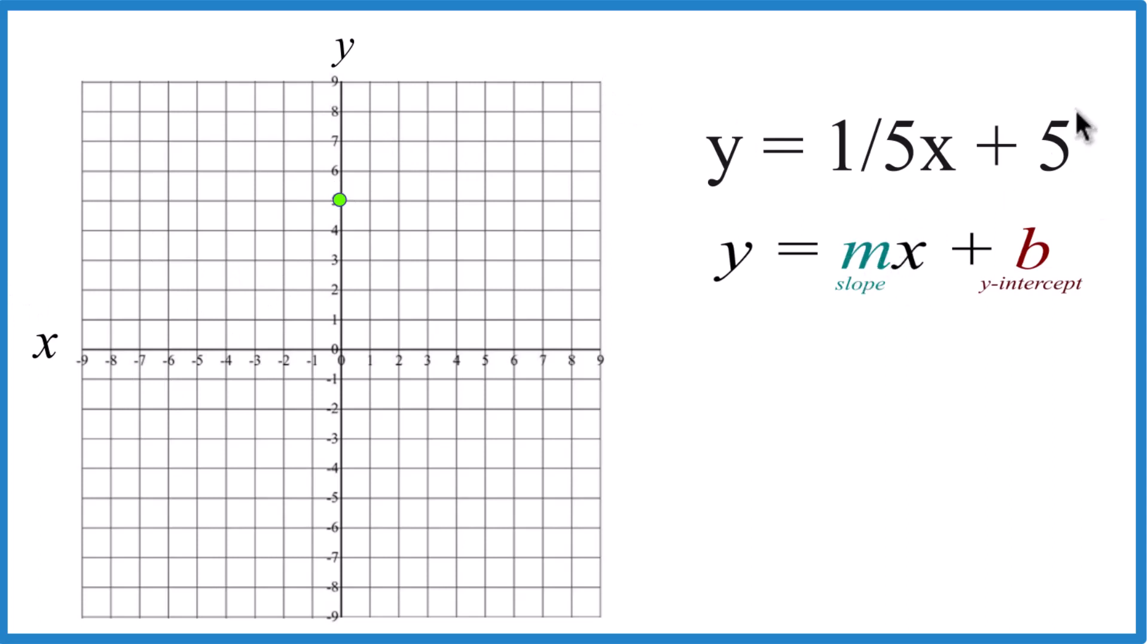The slope, that's one-fifth. We can think of that as rise over run. We rise one, run five. Go to the y-intercept. Rise one, run one, two, three, four, five.